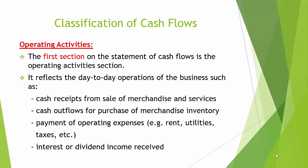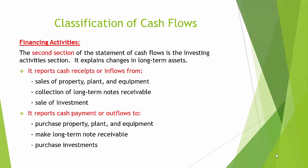The first section on the statement of cash flows is the operating activities section. It reflects the day-to-day operations of the business, such as cash receipts from sale of merchandise and services, cash outflows for purchase of merchandise inventory, payment of operating expenses such as rent, utilities, taxes, etc., and interest or dividend income receipt.